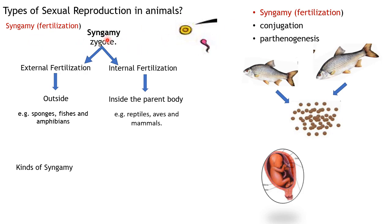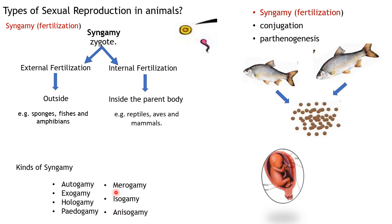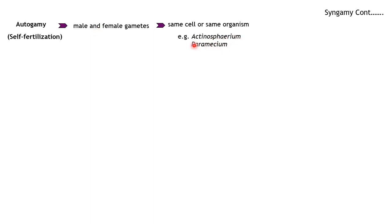Examples of internal fertilization include reptiles, aves, and mammals. All birds come under aves; snakes and crocodiles come under reptiles. Internal fertilization takes place inside the parent body, unlike external fertilization. Now let's see the different kinds of syngamy. Syngamy is the fusion of male and female gametes producing a zygote. The different types include autogamy, exogamy, hologamy, pyrogamy, mirogamy, isogamy, and anisogamy.